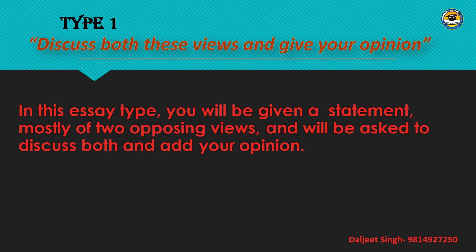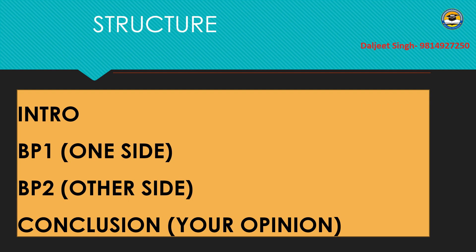Question Type 1: Discuss both views and give your opinion. In this essay type, you will be given a statement with two opposing views, and you will be asked to discuss both and add your own opinion. The structure is: Introduction, Body Paragraph 1 (first side discussed), Body Paragraph 2 (other side discussed), and Conclusion (your own opinion — whatever you find suitable).